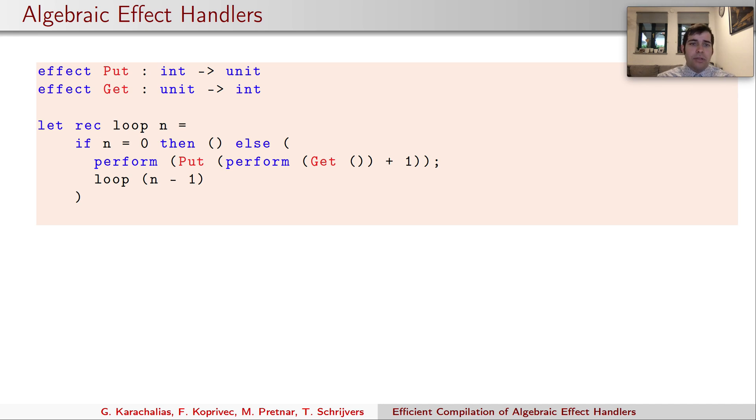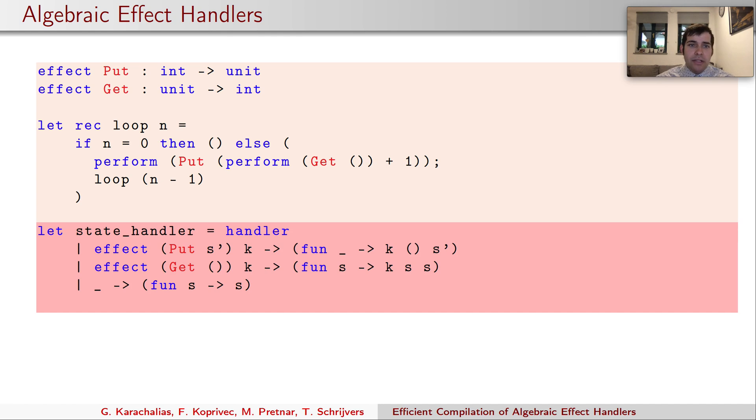To evaluate a loop we have to wrap it in a handler. It is the handler that provides meaning to operations. The handlers act similarly to exception handlers, except that they also provide a return clause. The return clause interprets the final result of a computation. The effect clauses also get an additional parameter k, usually called continuation, which is the suspended computation at the point where the effect was invoked.